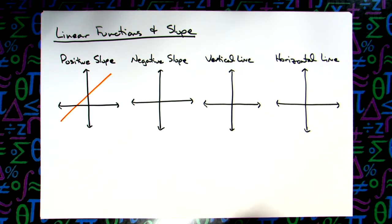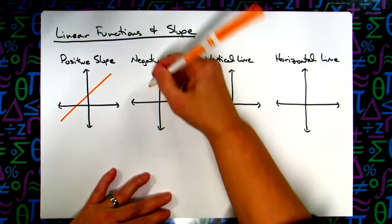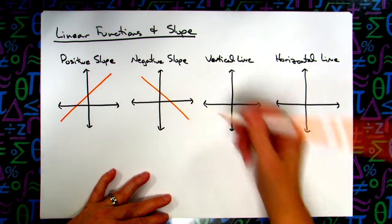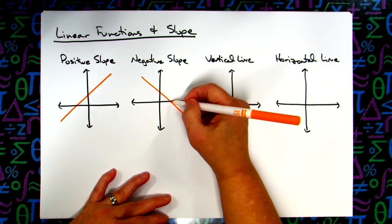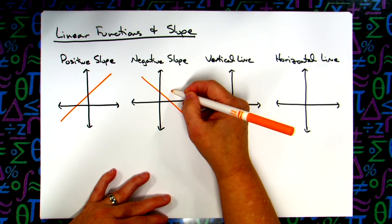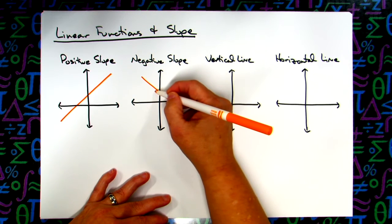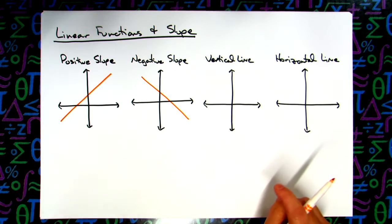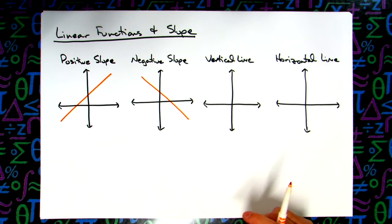Our negative slope falls to the right, so all negative slopes look like this. You would be rising with a positive number and running with a negative number, therefore you get your negative slope.